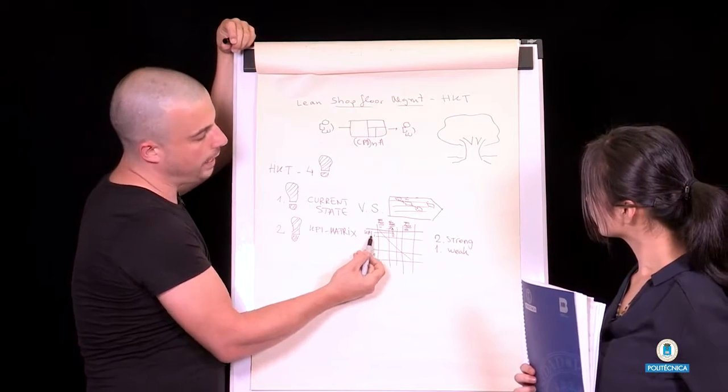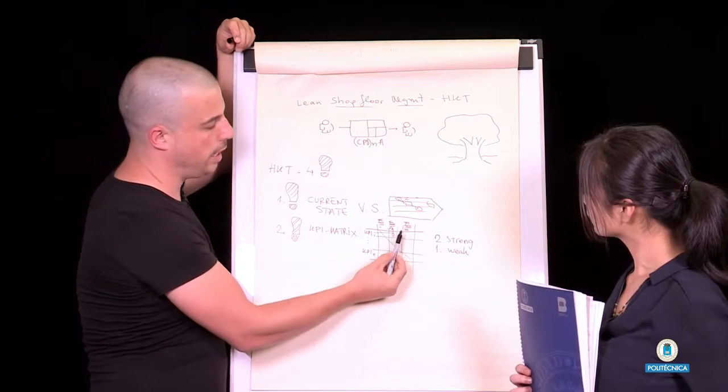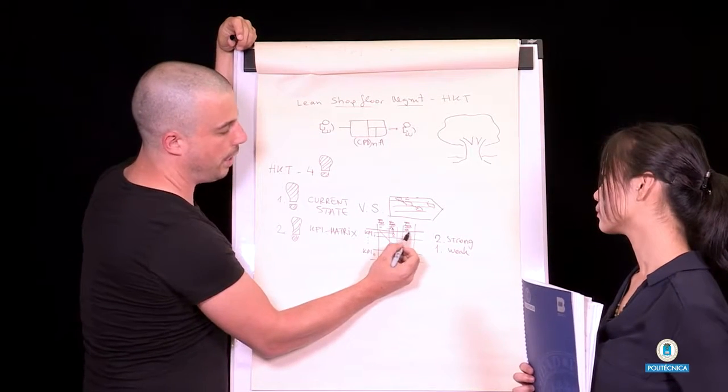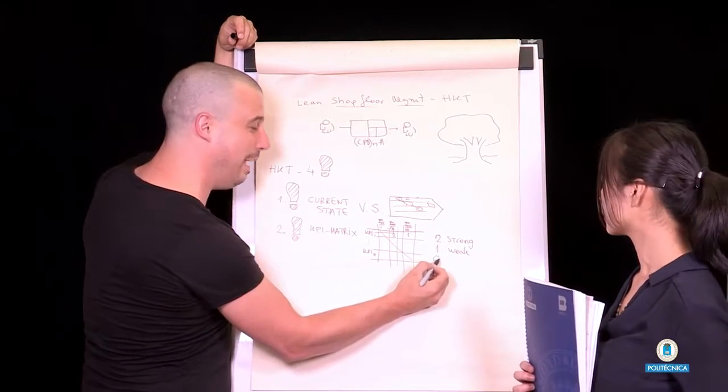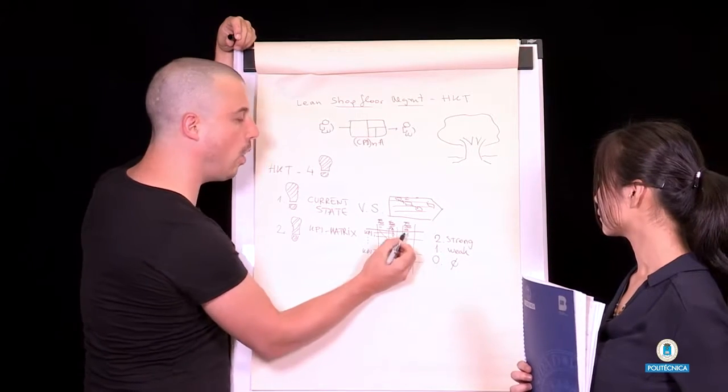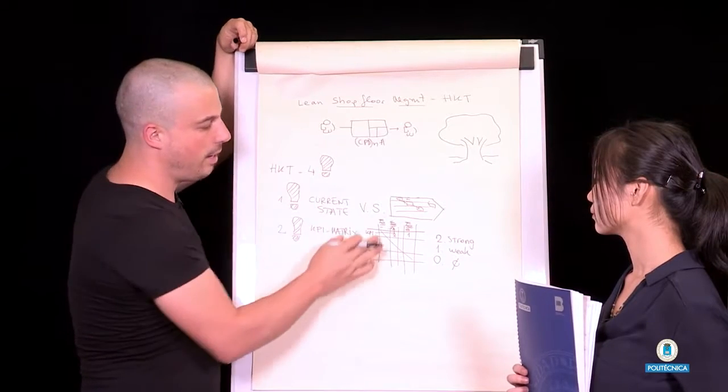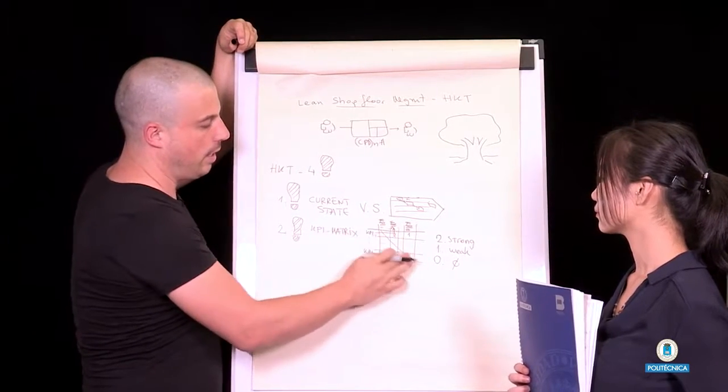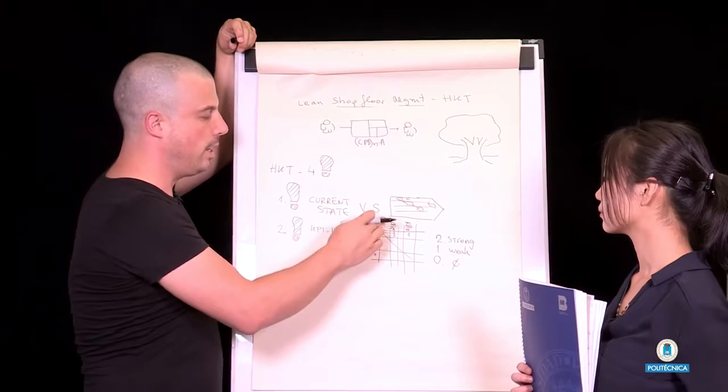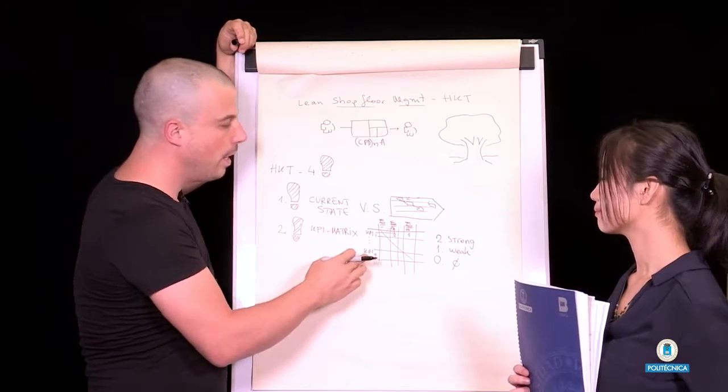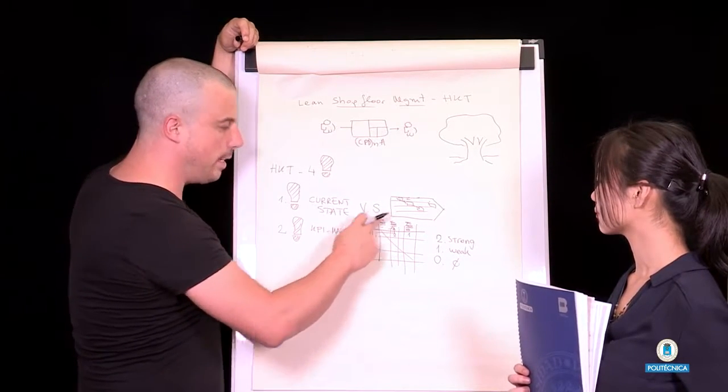For instance, if quality is not impacting cost, we would put here a 1. And if it has no impact at all, we would put a 0. Of course, the diagonal of this matrix we can forget about it because KPI 1 will influence 100% KPI 1. So this is the second step.